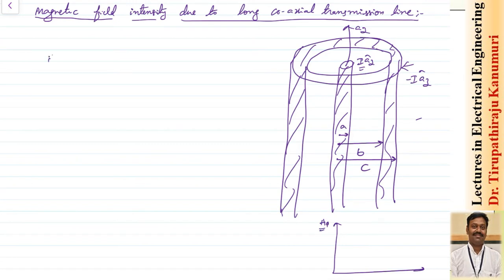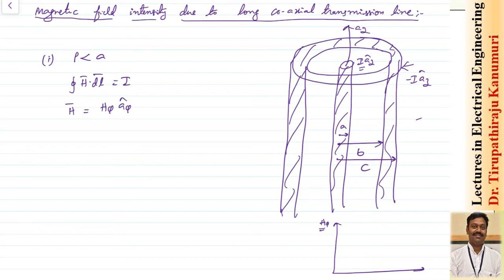The first case: ρ less than A, meaning we are inside the inner conductor. At every point, the closed line integral of H dot dL equals the current enclosed. We can write H equal to H_φ in the direction of A_φ, because by the right-hand rule the curling fingers indicate the field direction in A_φ. The differential length is ρ dφ in the direction of A_φ.